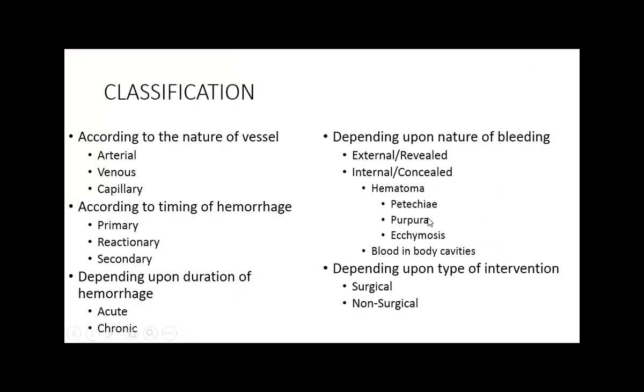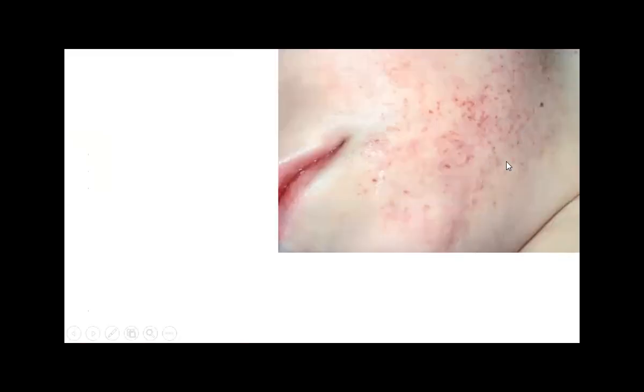Hematoma can be of three types depending upon the size of the bleeding spots. Petechiae are pinpoint bleeding spots on the skin or underneath the epithelial tissue, or on the mucosa of internal organs. This is Petechiae.